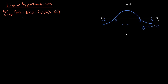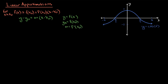We can derive this from the equation of a line. Starting with point-slope form: y minus y naught equals m times x minus x naught. We let y equal f of x, y naught equal f of x naught, and m equal f prime of x naught because we're making a tangent line. Rewriting and solving for f of x gives us f of x equals f of x naught plus f prime of x naught times x minus x naught — just a tangent line based at x naught.